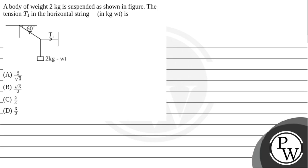Hello students, let us read the question. A body of weight 2 kg is suspended as shown in figure. The tension T1 in the horizontal string in kg weight is: option A 2 by root 3, option B root 3 by 2, option C 2 by 3, option D 3 by 2.